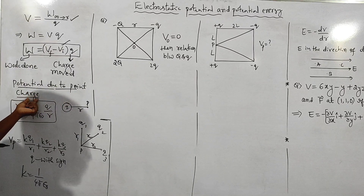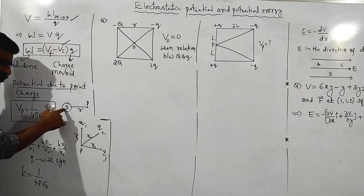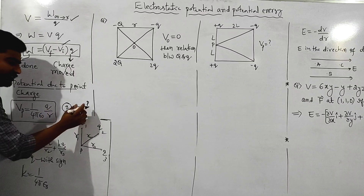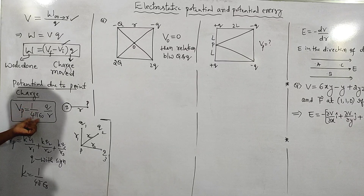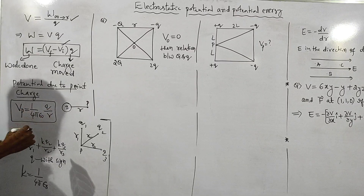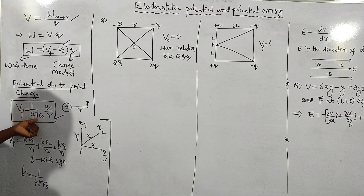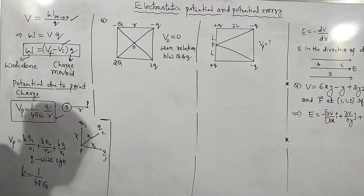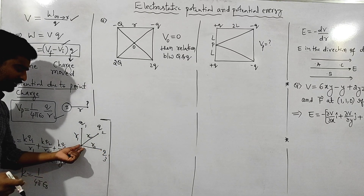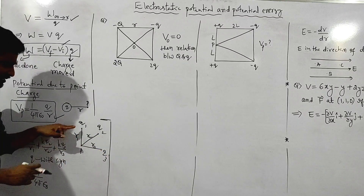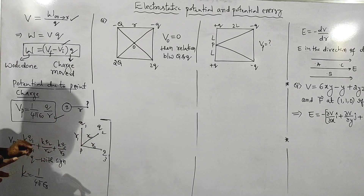Potential due to a point charge: for a point charge q at distance r, the potential is equal to 1 over 4π epsilon times q divided by r. For multiple charges, using the superposition principle, we simply add the individual potentials. This is very important.